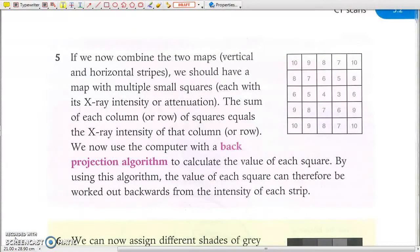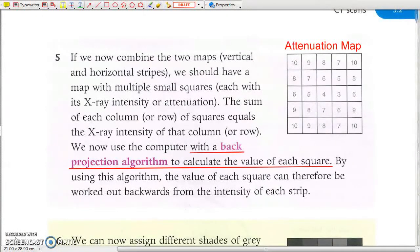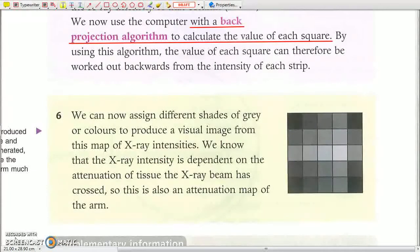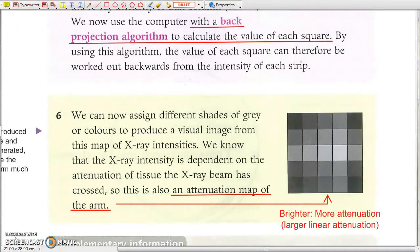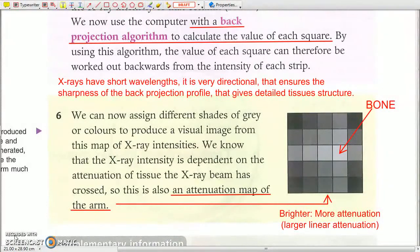The two attenuation profiles are combined into an attenuation map of the tissue structure, which is a numerical representation of the tissue structure. A smaller number in the attenuation profile, which is actually the transmitted intensity, corresponds to the tissue of higher attenuation. And in this way the bone can be located. And as X-rays are very directional, it ensures the sharpness of the back projection profile, and that may give more details of the tissue structure.